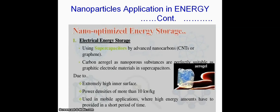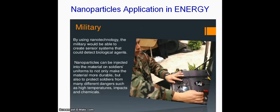Another application of nanotechnology in energy: nano-optimized energy storage using supercapacitors by using CNTs or graphene or carbon nanotubes. Carbon aerogels or nanoporous substances are perfectly suitable as graphite electrode materials in supercapacitors due to their extremely high inner surface. Power density more than 10 kilowatt per kilogram. They are used in mobile applications where high energy amounts have to be provided in a short period of time.